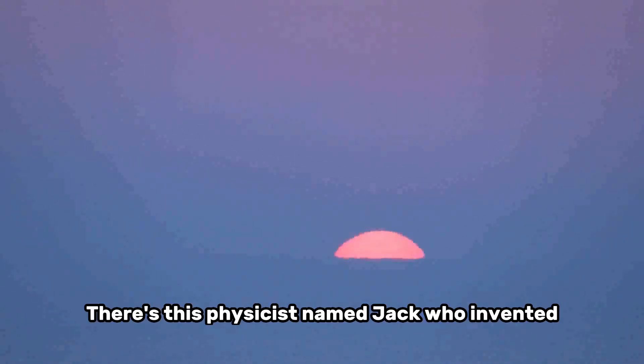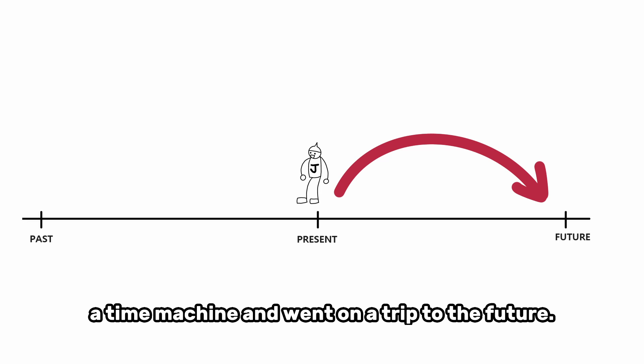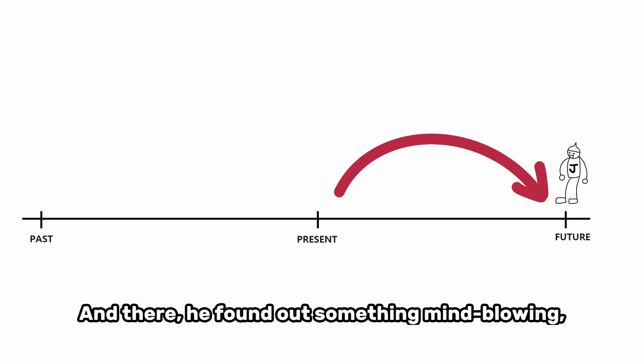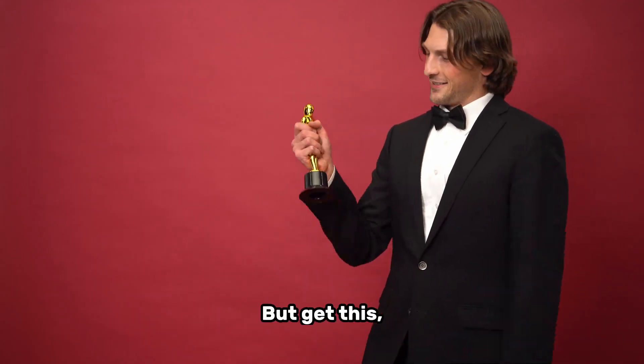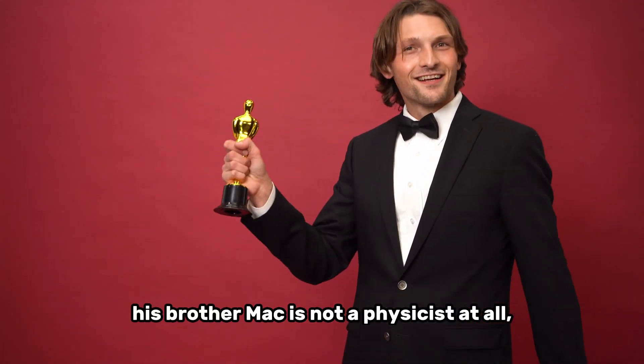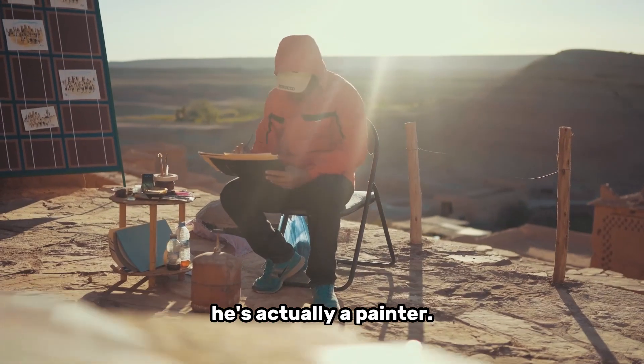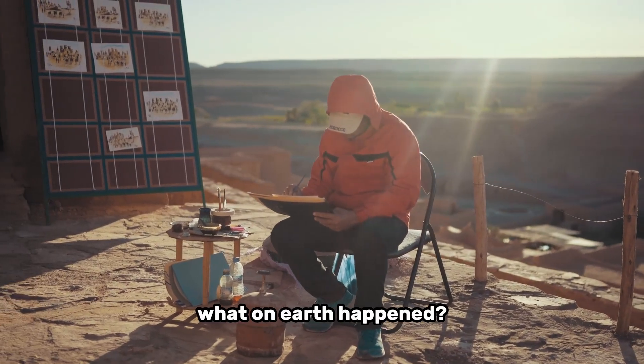There's this physicist named Jack who invented a time machine and went on a trip to the future. And there, he found out something mind-blowing. His brother won the Nobel Prize in Physics. But get this, his brother Mac is not a physicist at all, he's actually a painter. Jack was like, what on earth happened?